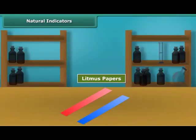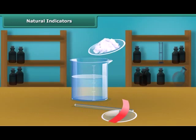Litmus is a natural indicator. It is extracted from lichens and has a purple color in distilled water. It is available in the form of a solution or litmus papers. You can test the nature of a solution by litmus paper.